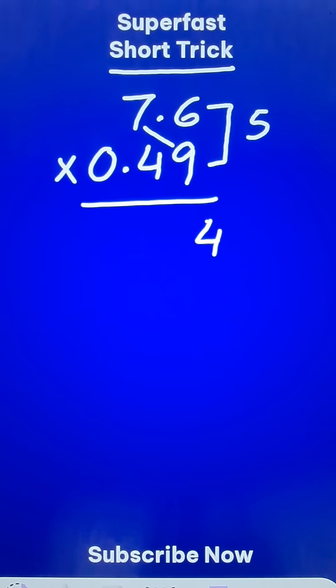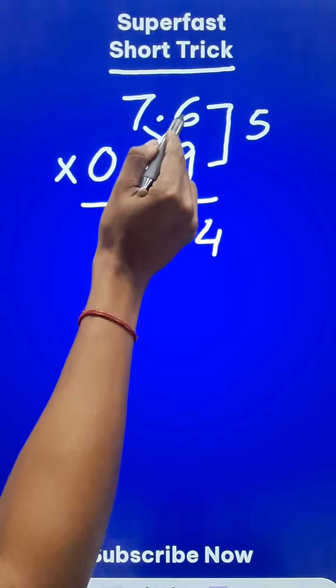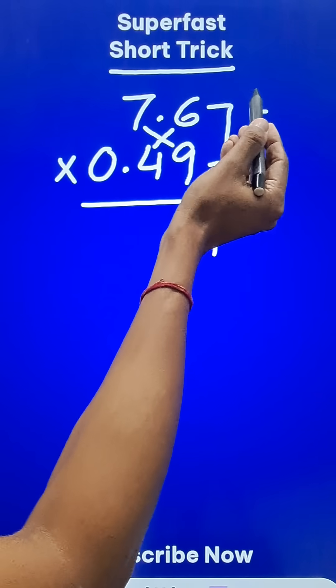Now cross multiply: 7 times 9 is 63 and 6 times 4 is 24. So 63 and 24 gives you 87 as the sum, plus 5 is 92.